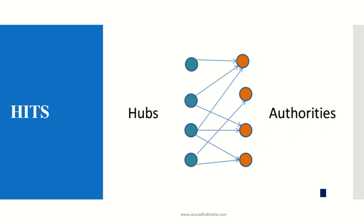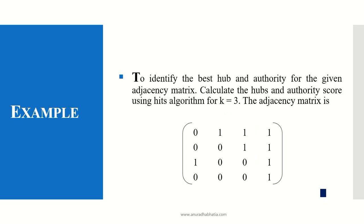Let's take a very simple example to explain the concept of hubs and authorities. To identify the best hub and authority for the given adjacency matrix, we calculate the hub and authority score using the HITS algorithm for K equal to 3. The adjacency matrix is given, and we need to find out the best hub, the best authority, and their scores.